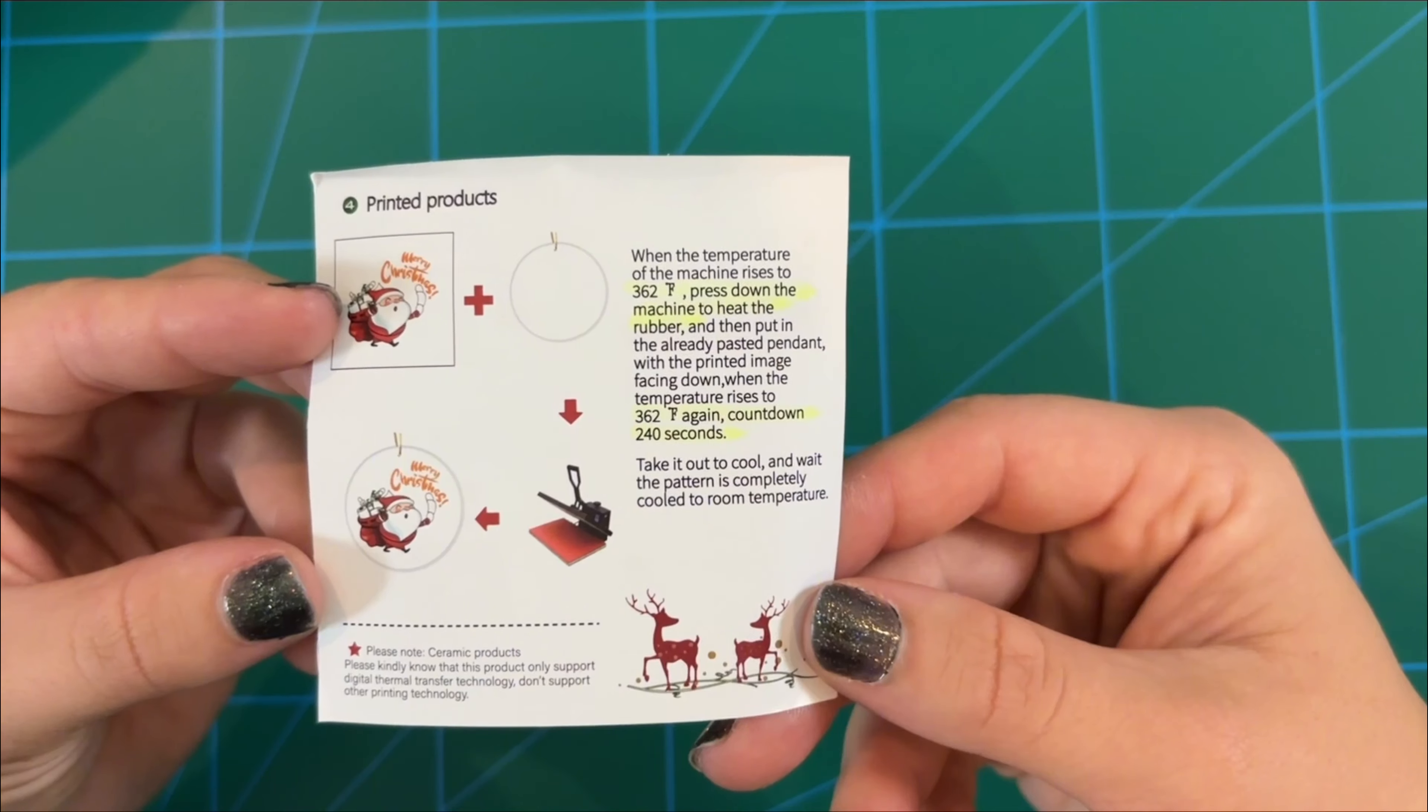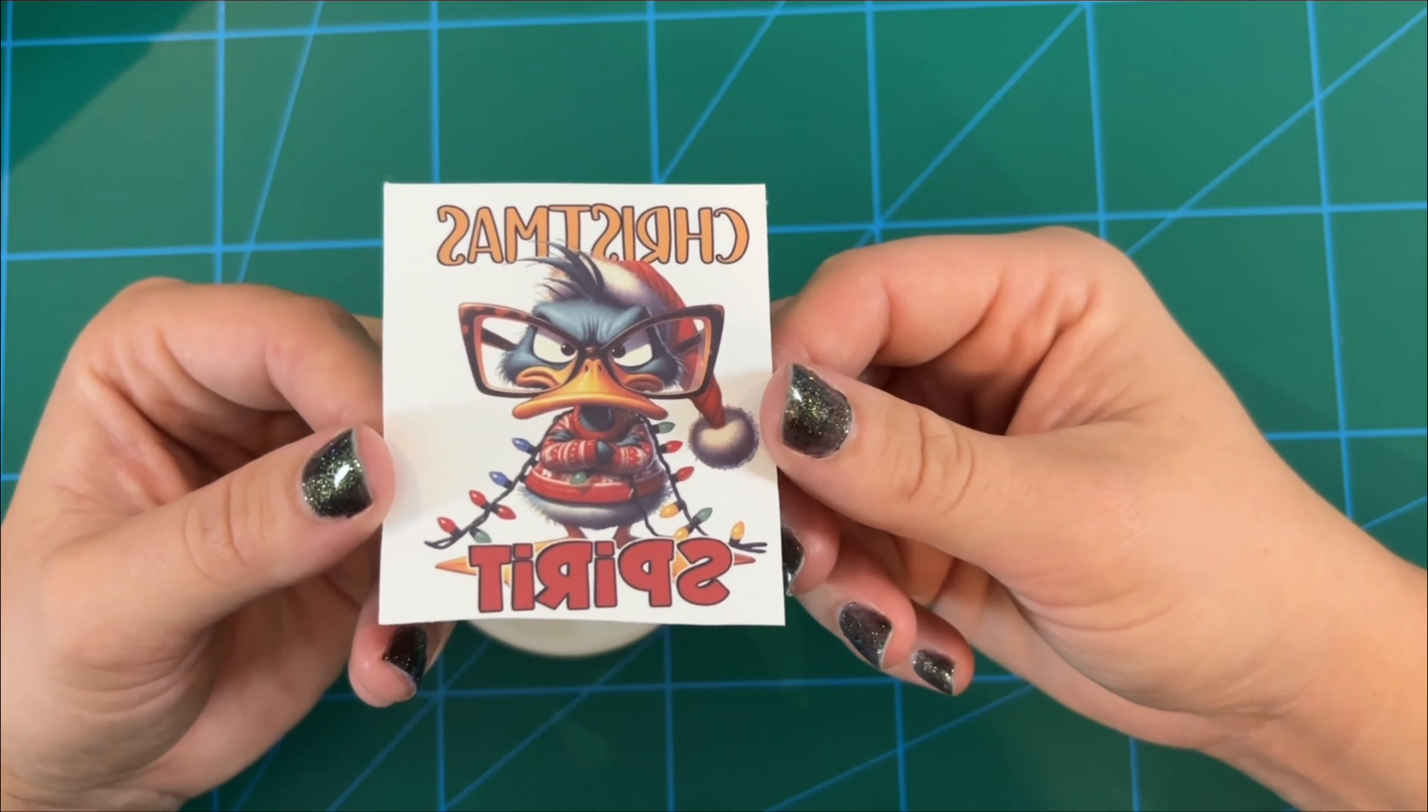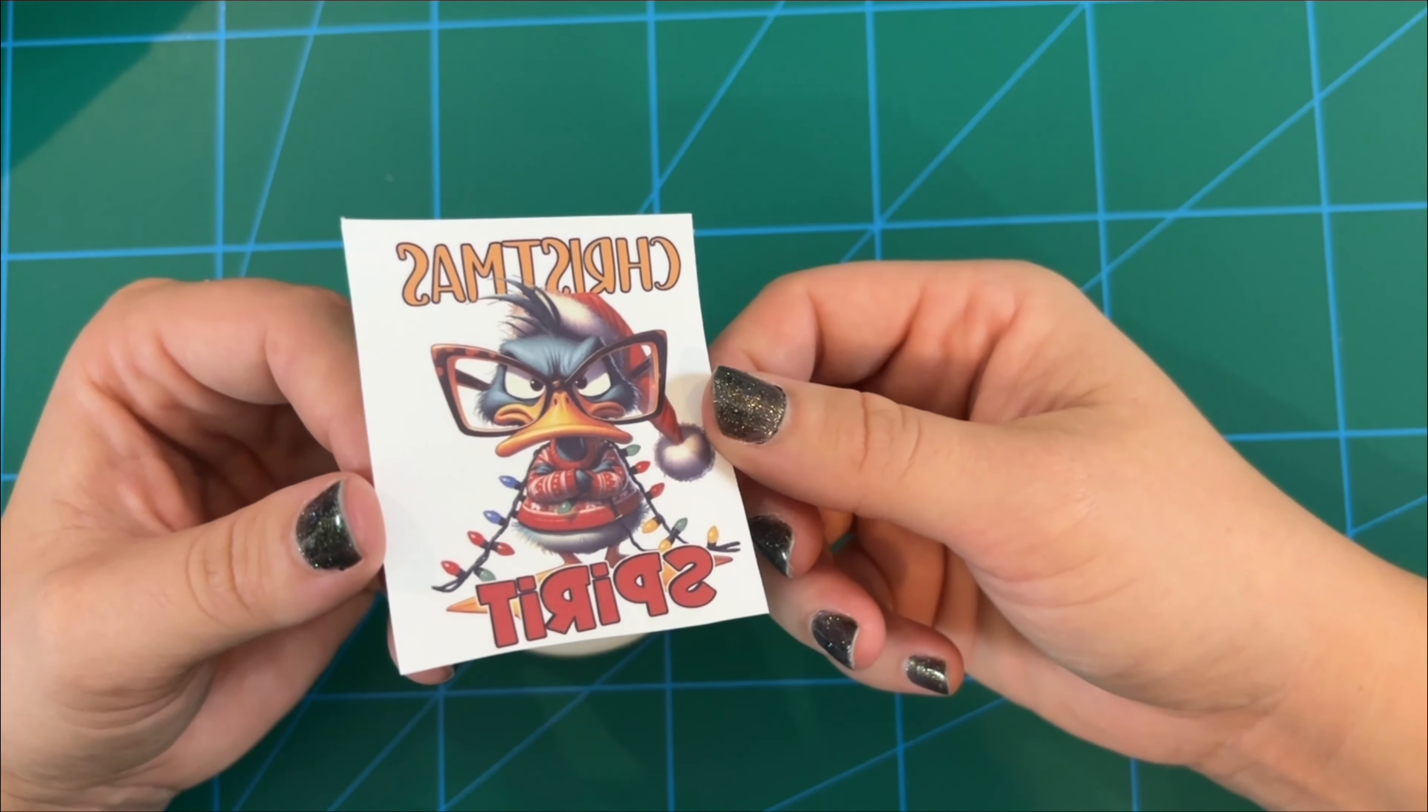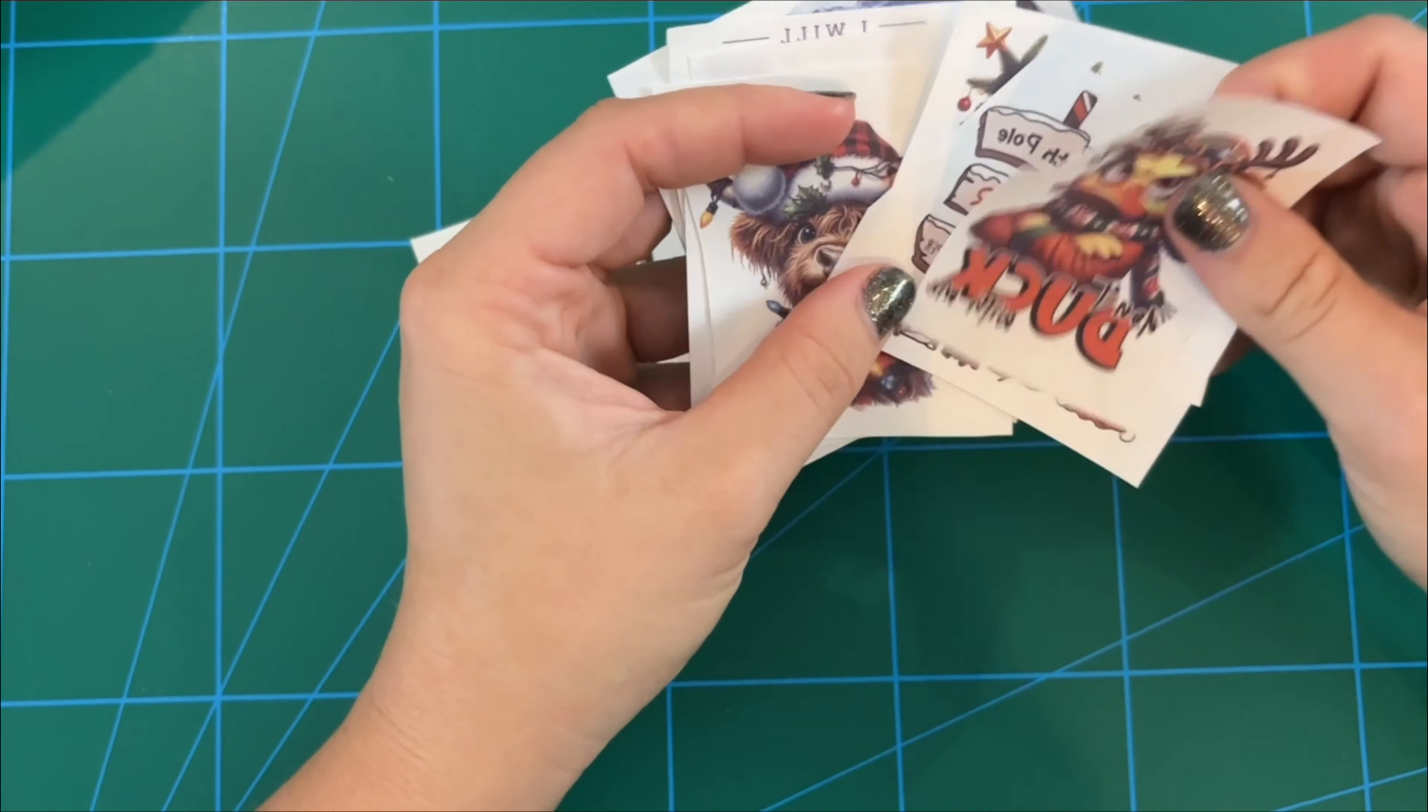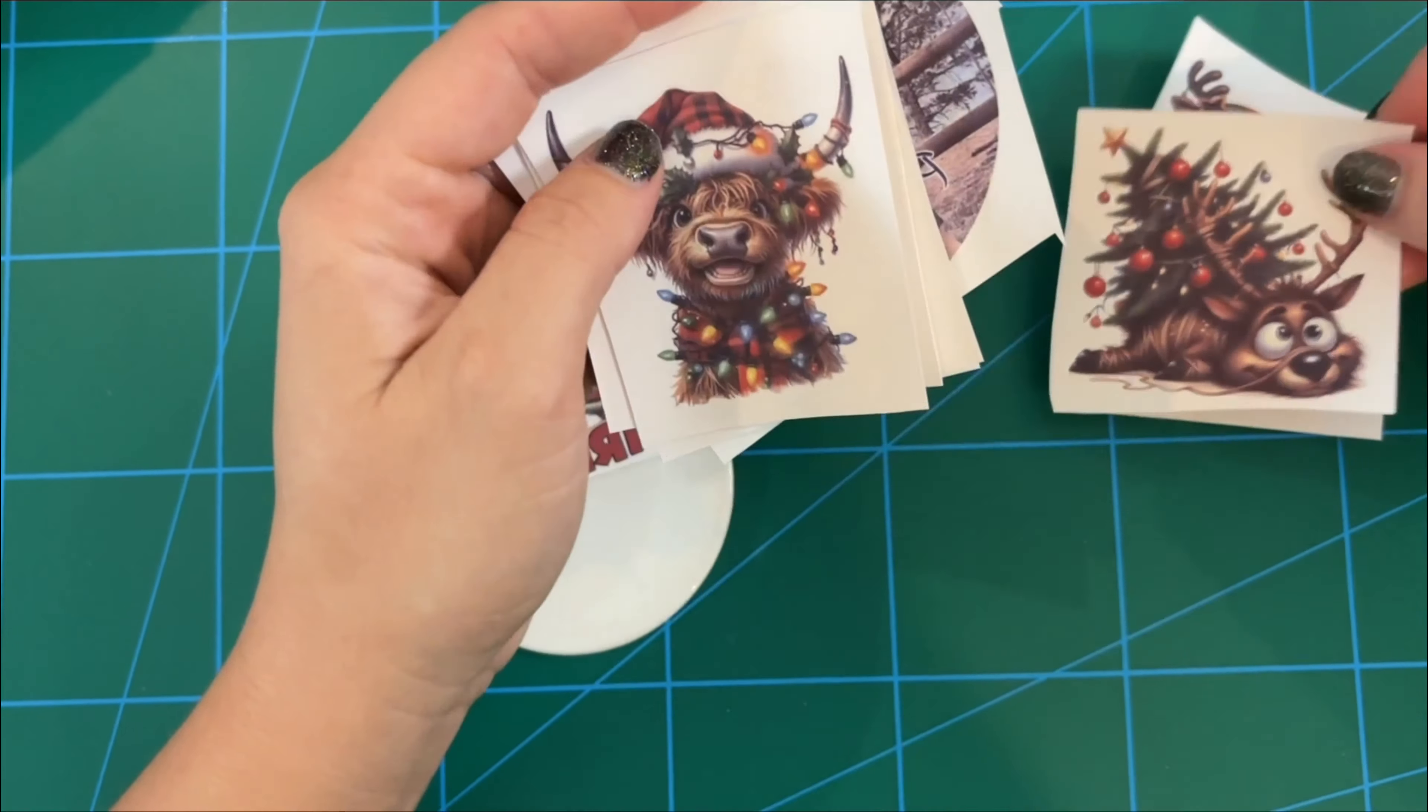Designs can be applied in a few different methods. The first method is by taking a PNG or an image and placing it on the center of the ornament. You do need to keep in mind that it should be less than 2.75 inches to accurately fit, and you want it to be below that hole in the center where the string goes, because if anything gets pressed onto that, of course, it's not going to show up.